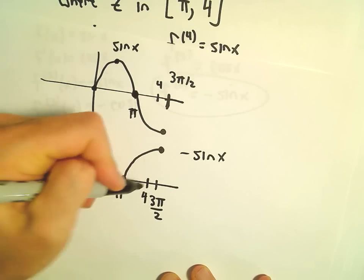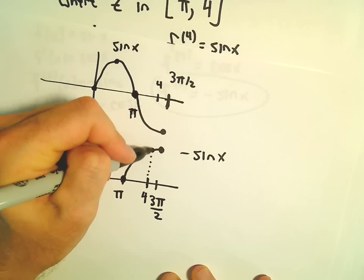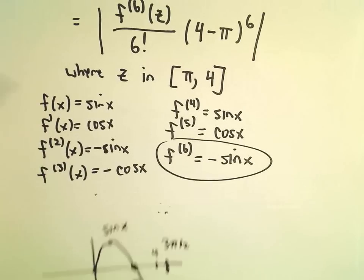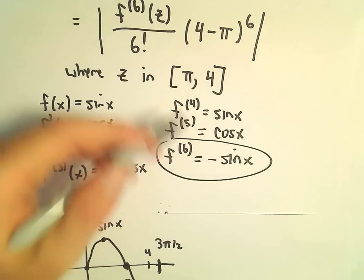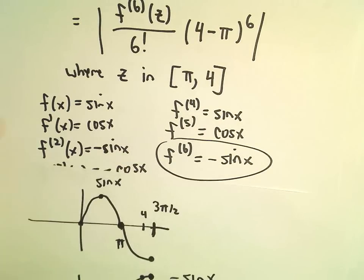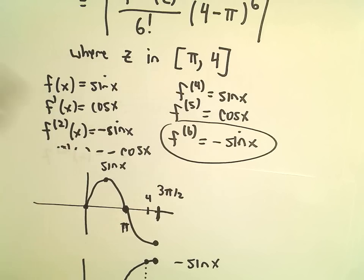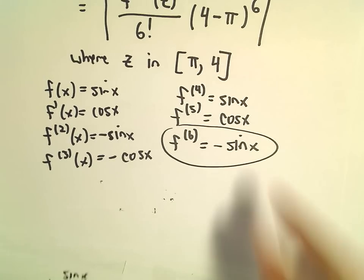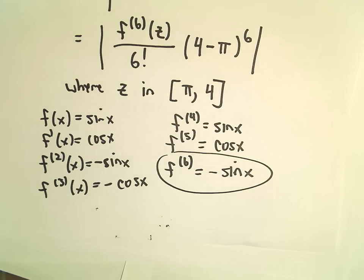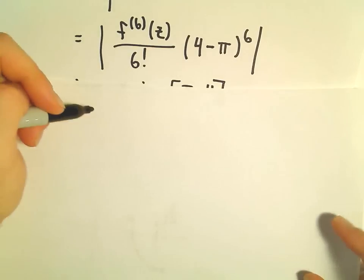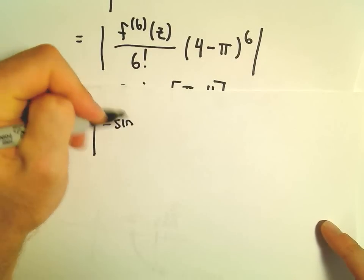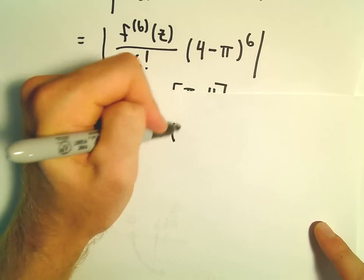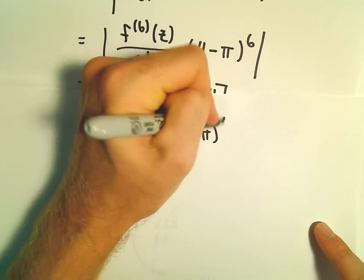This is going to be largest at the x-coordinate of 4. So to make our sixth derivative as large as possible, we're going to plug in the x-coordinate of 4. So our expression is simply going to be left with negative sine of 4 over 6 factorial, then 4 minus pi raised to the sixth power.